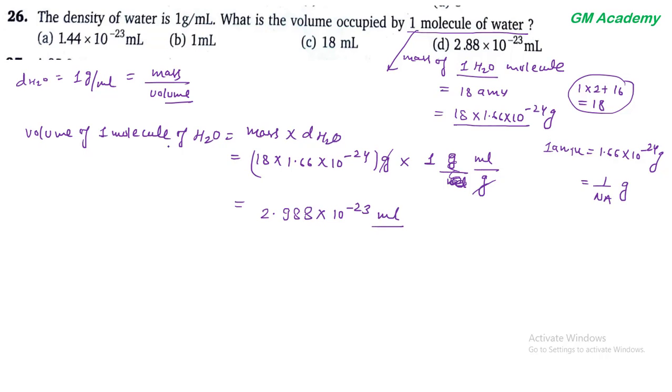Volume of one molecule of H₂O = 2.988 × 10⁻²³ ml, जो option D से match कर रहा है।